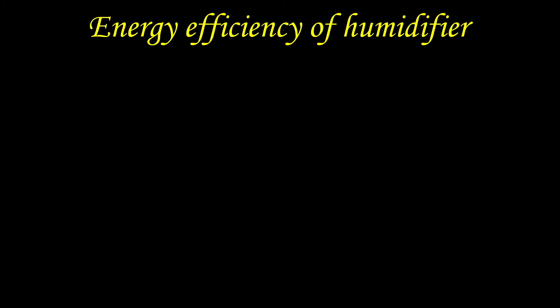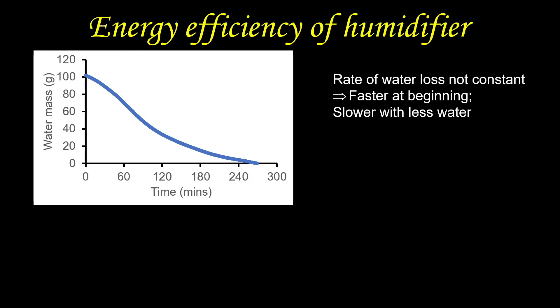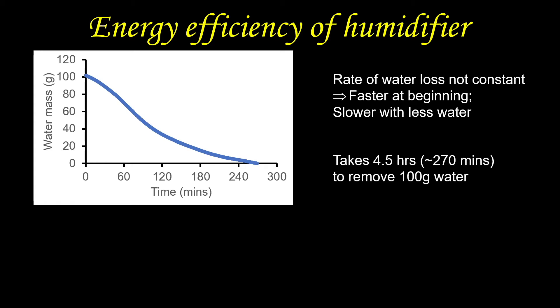Here is how the water mass changes with time. We can see that the rate of water loss is not constant — it is faster at the beginning, but slower with less water at the end. On average, it takes about 4.5 hours to remove 100g of water.